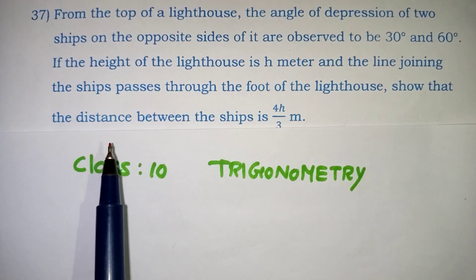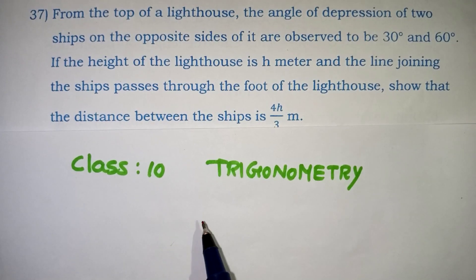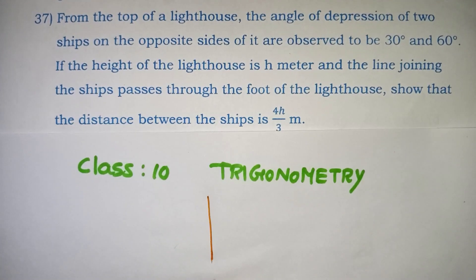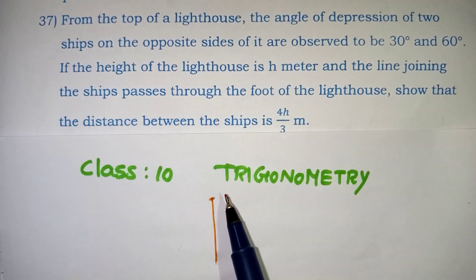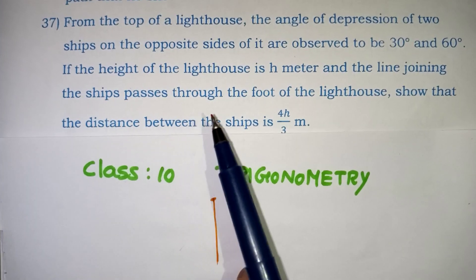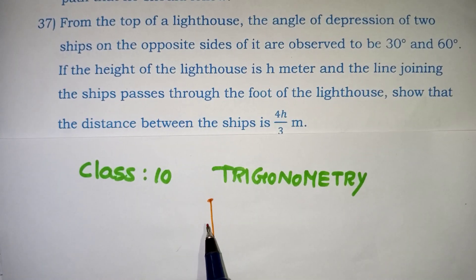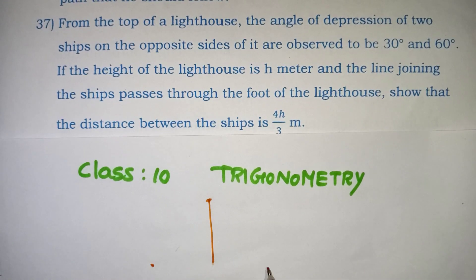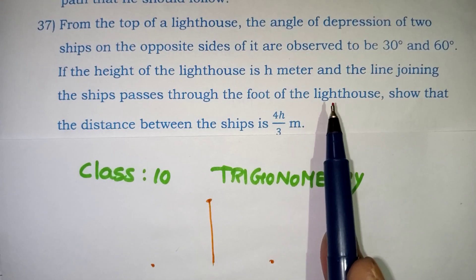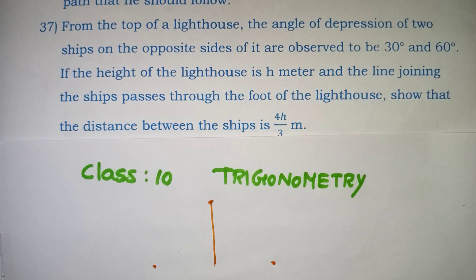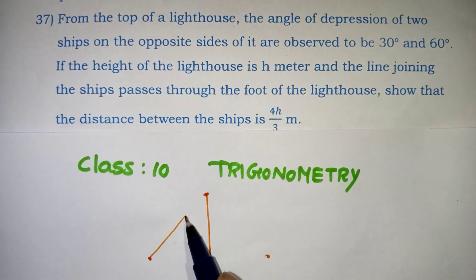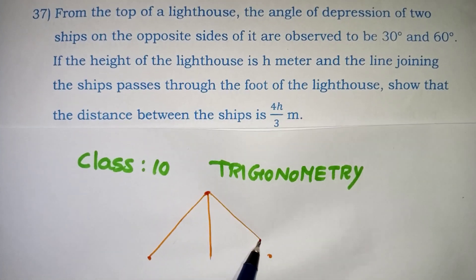From the top of a lighthouse, the angle of depression of two ships on the opposite sides of it are observed to be 30 degrees and 60 degrees.